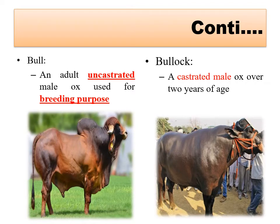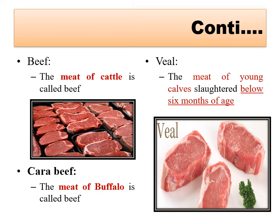Castration is performed because it eliminates testosterone hormone production, making the animal docile. Bulls are generally more aggressive than bullocks because in bulls testosterone is produced. In bullocks, due to castration and cutting of the spermatic cord, the testicles are dissolved and testosterone production stops, so the animal becomes docile.